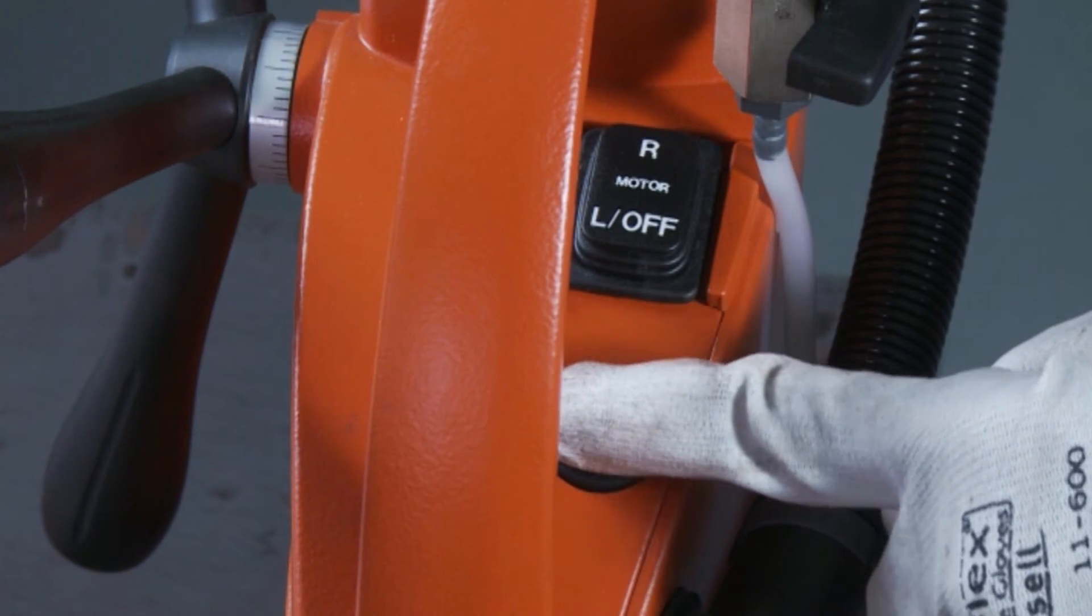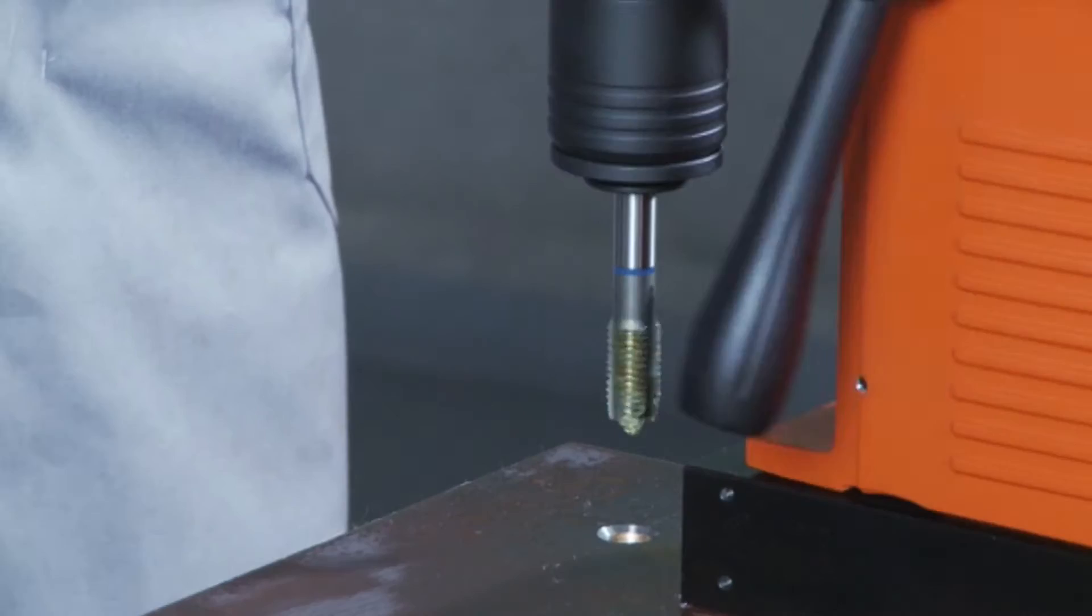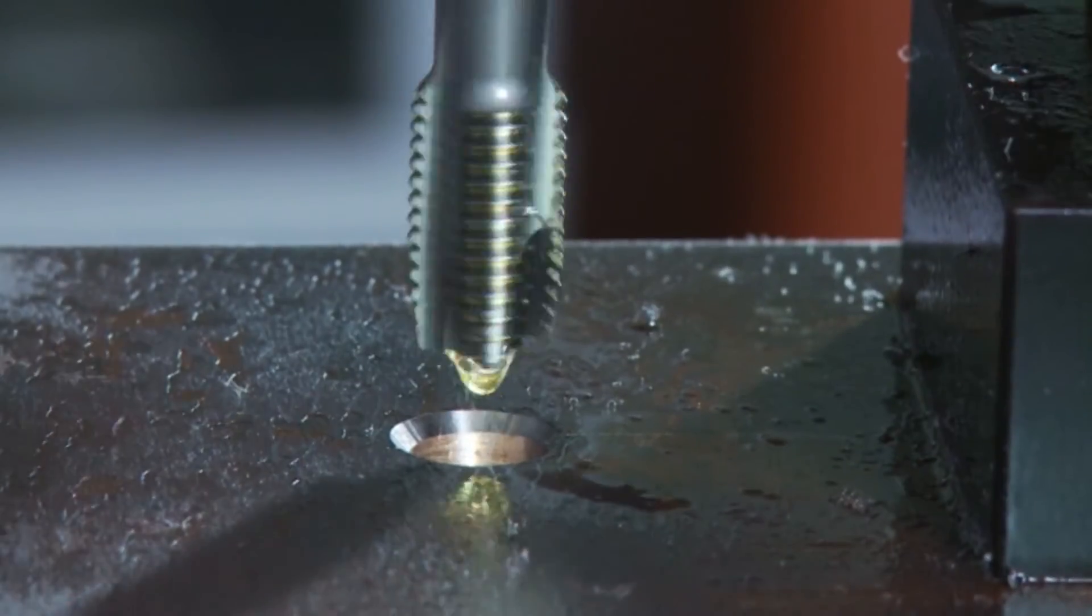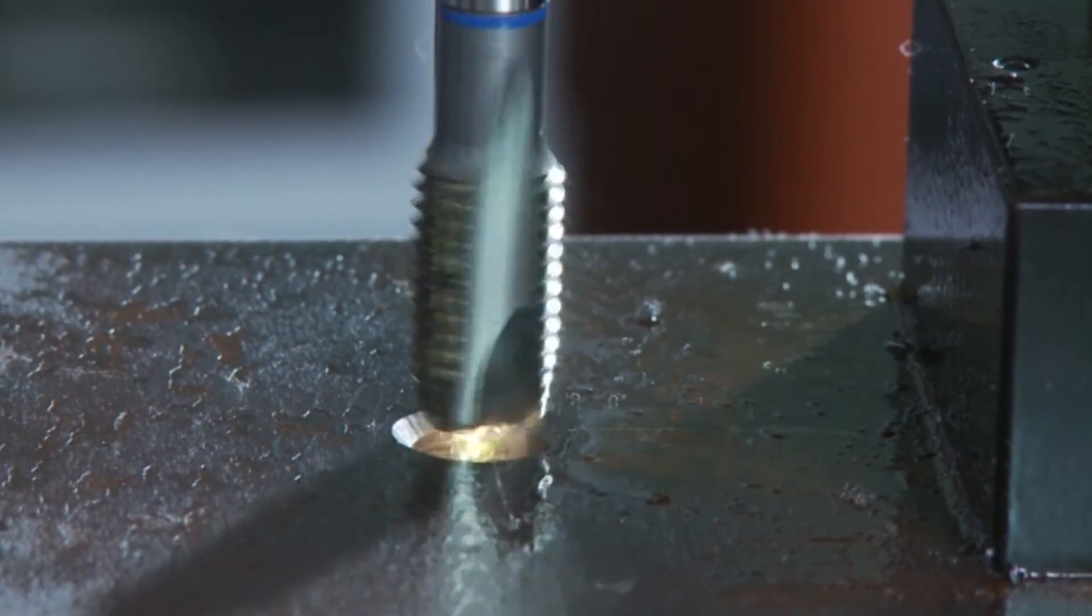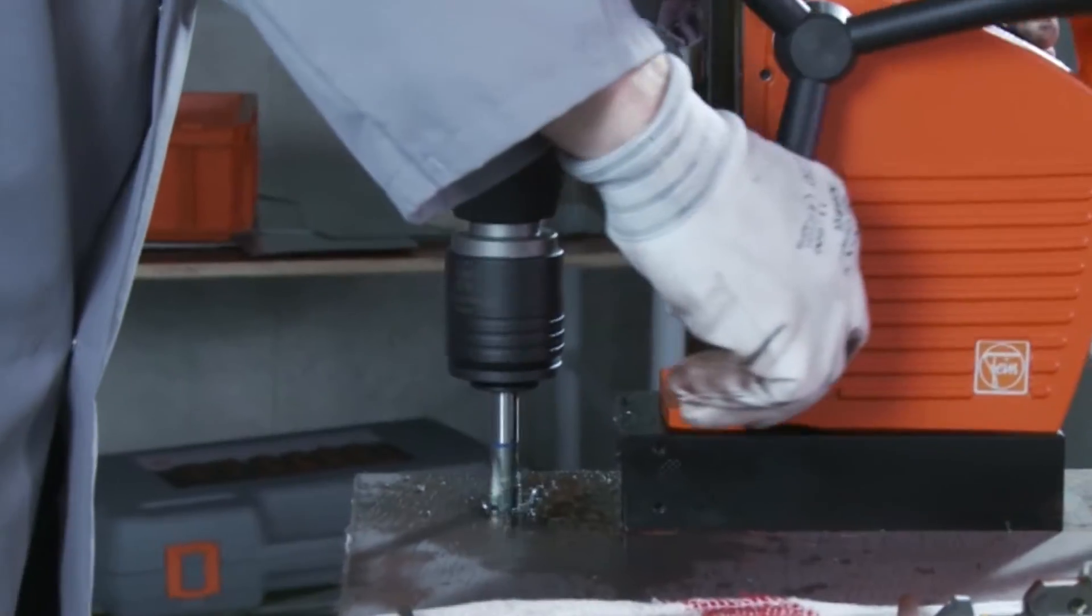Start the core drilling unit in forward rotation and lower the speed approximately 30% by pressing the slow button. Keep one hand on the handle at all times during tapping and press the off switch immediately after the hole has been threaded.